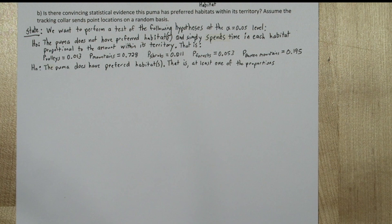Our alternative hypothesis is that the puma does have preferred habitats. That is, at least one of the proportions above is incorrect. So notice our state step has our significance level, alpha equals 0.05, and it also has our hypotheses, and we've defined our parameter P, the proportion of time the puma is spending in each habitat.